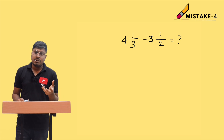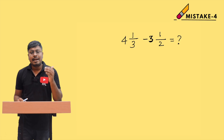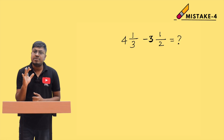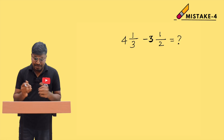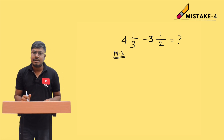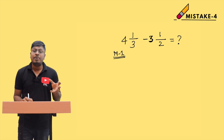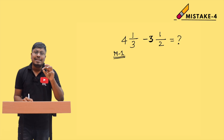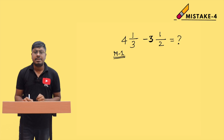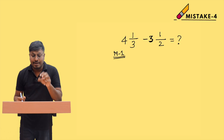In method number 1, students convert the mixed fraction into an improper fraction, take the LCM, and find the value of the question mark. Only about 5% of students use method number 1. Students don't usually use it because if the question involves two-digit or three-digit numbers, it becomes a lengthy process.